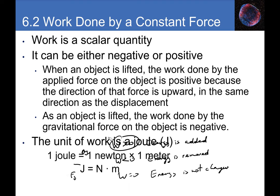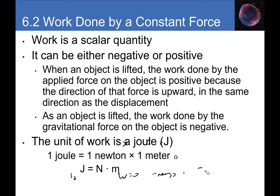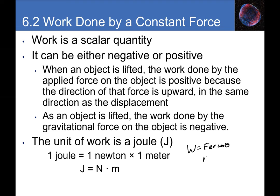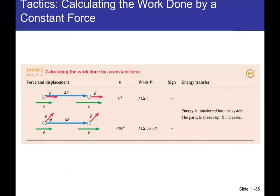The units for work: W = F·Δr·cosθ, so force in newtons times displacement in meters; cosθ is dimensionless, giving newton·meters. We define this as joules (J) — the unit for work and energy. One joule equals one newton of force pushing an object through a displacement of one meter.